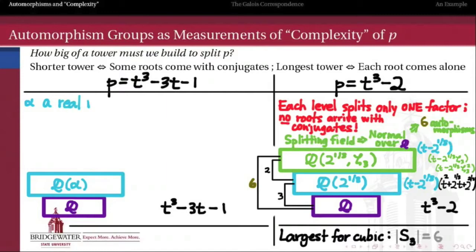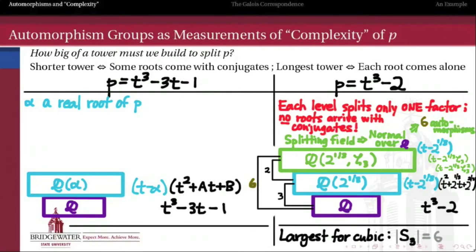So let's call alpha a real root of this polynomial. Since it's cubic, it has to have at least one real root — its graph has to cross the x-axis. If we make this extension, it's going to be an extension of degree 3 because its minimal polynomial will be p. So we can factor a t minus alpha out of it. Now the question is: when we factor t minus alpha out of it, what remains? What is this quadratic that's left over?